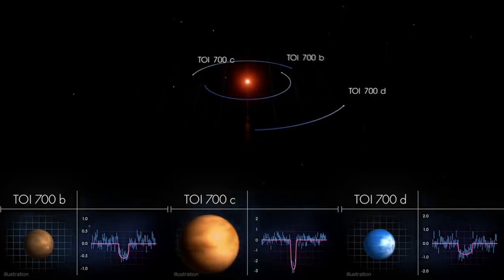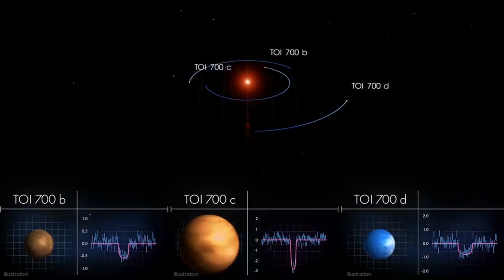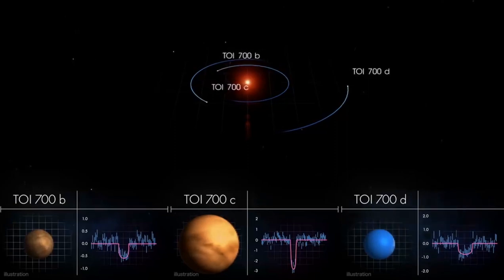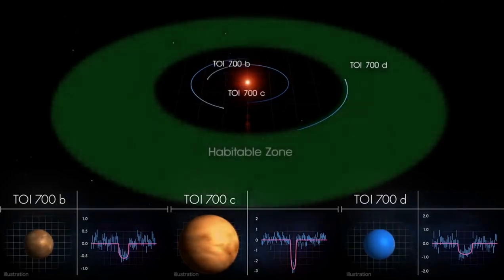All three may be tidally locked, rotating just once each orbit, so the same side always faces the star. But most importantly, TOI 700d is within the star's habitable zone.